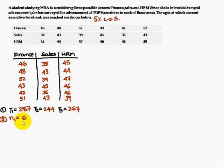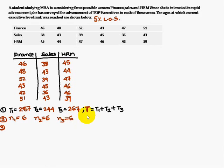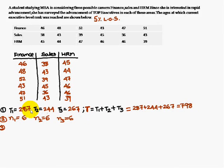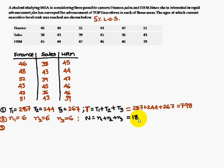The number of items in the finance column is six, denoted N1. Similarly, the number of items in sales is N2 = 6, and the number of items in HRM is N3 = 6. Capital T equals T1 plus T2 plus T3, that is 287 plus 244 plus 267, giving T = 798. Capital N = 18.